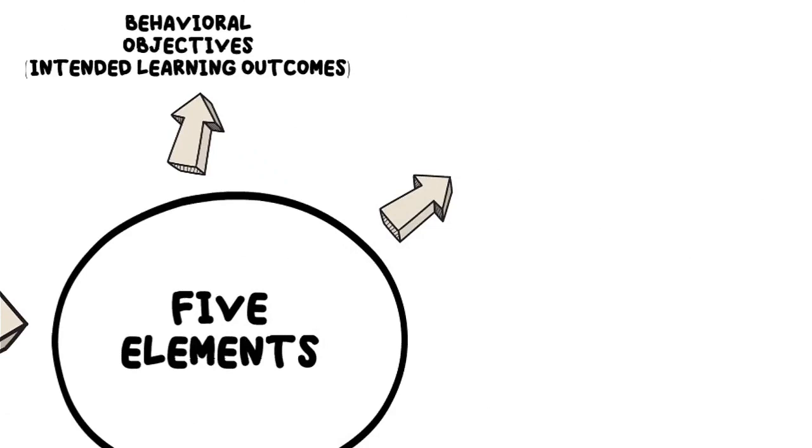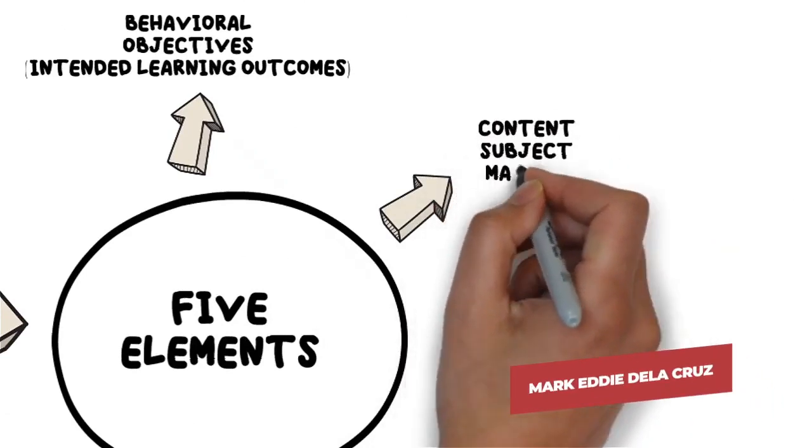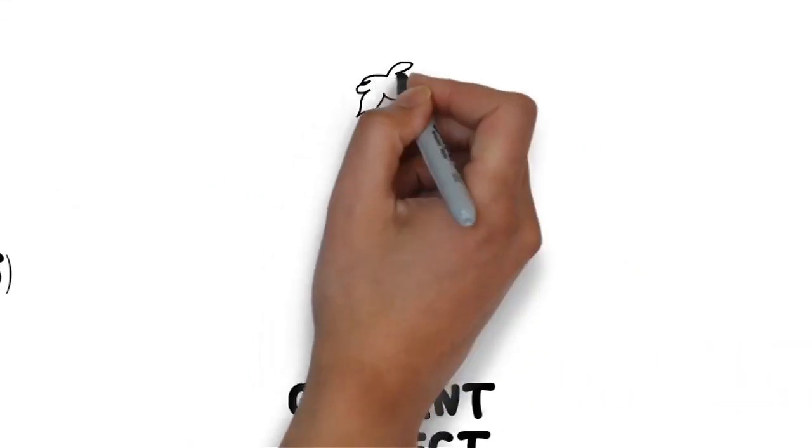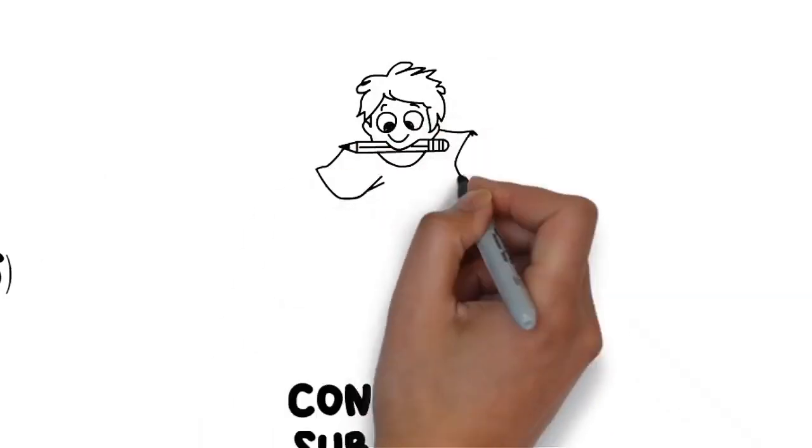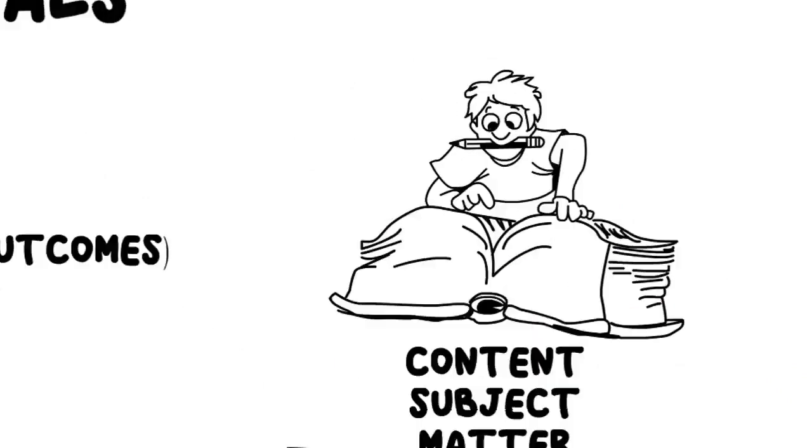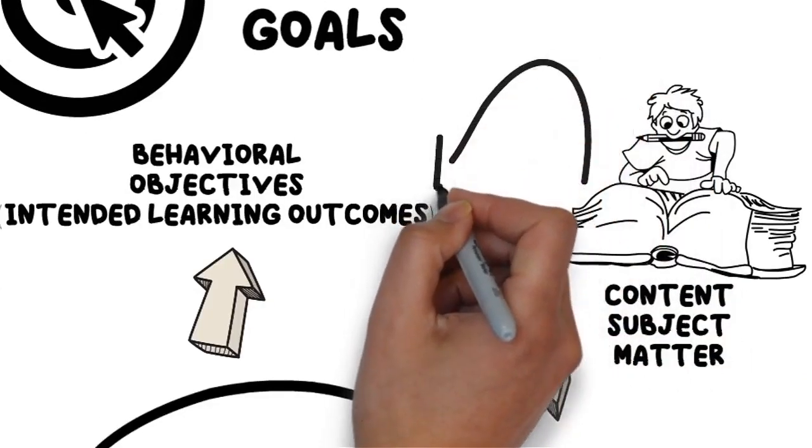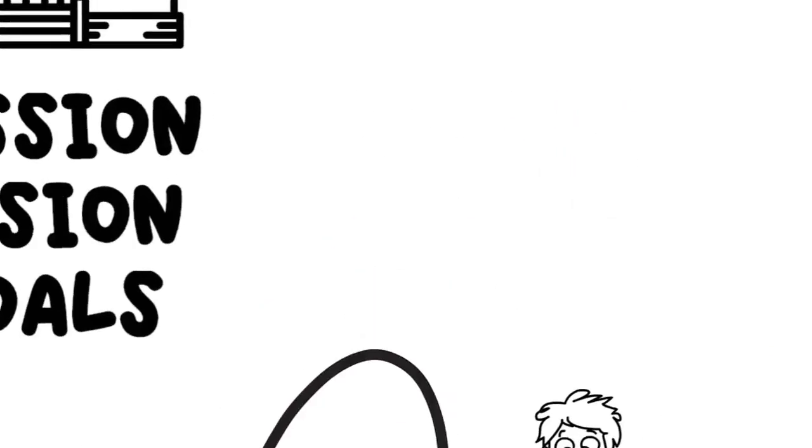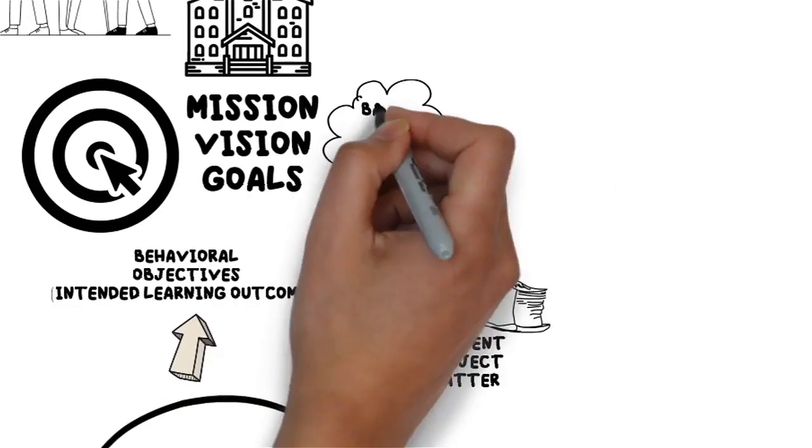The second element is the content or the subject matter. A curriculum will not be complete without this element. It refers to the body of knowledge that needs to be taught and skills to be acquired by the students. The curriculum content is based on our intended learning outcomes. This is the example of content or the subject matter.